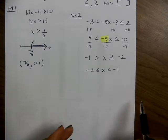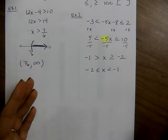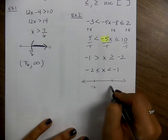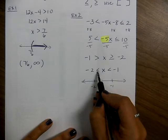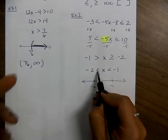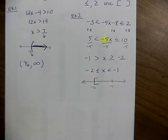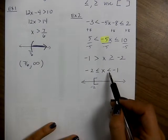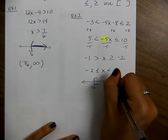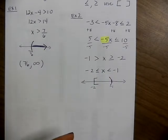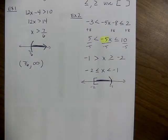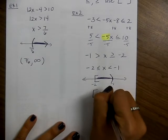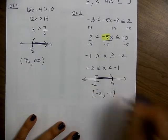These are easier to write in interval notation because it just drops down. On the number line we'd have negative 2 with a closed circle — that's less than or equal to — which becomes a bracket. At negative 1 we have less than, so that's a parenthesis — that open circle. It's everything in between: bracket negative 2, comma negative 1 with a parenthesis.